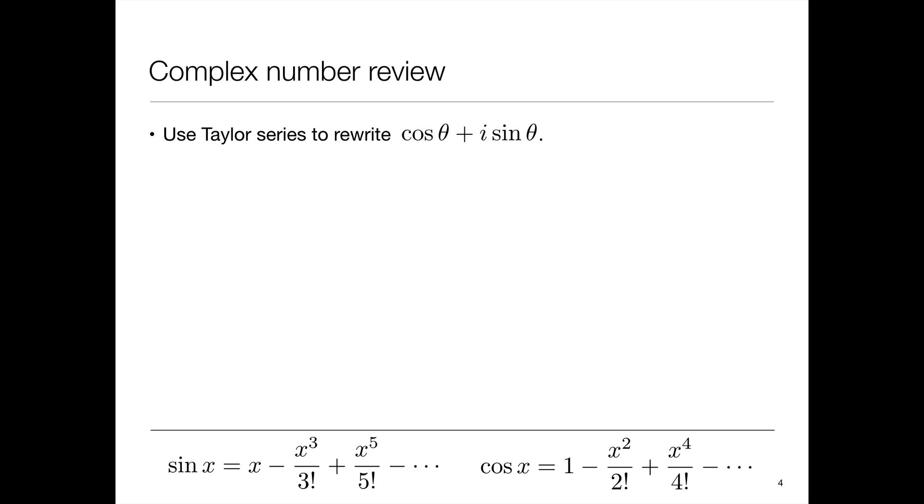So how are we going to use Taylor series to rewrite cosine theta plus i sine theta? We have two pieces here sine x and cosine x written as Taylor series. So let's replace those in the expression cosine theta plus i sine theta and see what we get. Well there's the cosine series straight up and there's the sine series with an i multiplying it in front.